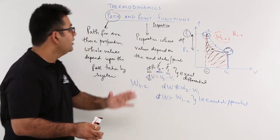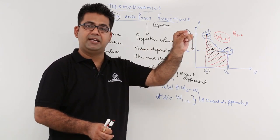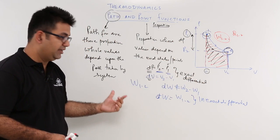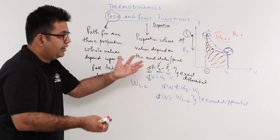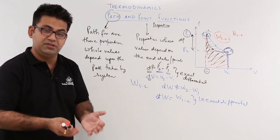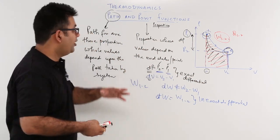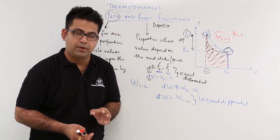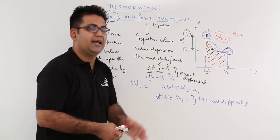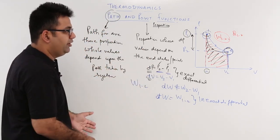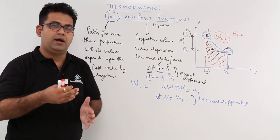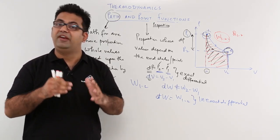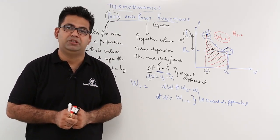In a nutshell: a path function depends upon the path the system undertakes in going through a process, and a path function is an inexact differential — for example, work interaction or heat interaction. A point function depends upon the end states and is an exact differential. Now let's move on to the next video and talk about a very important topic: the quasi-static process.